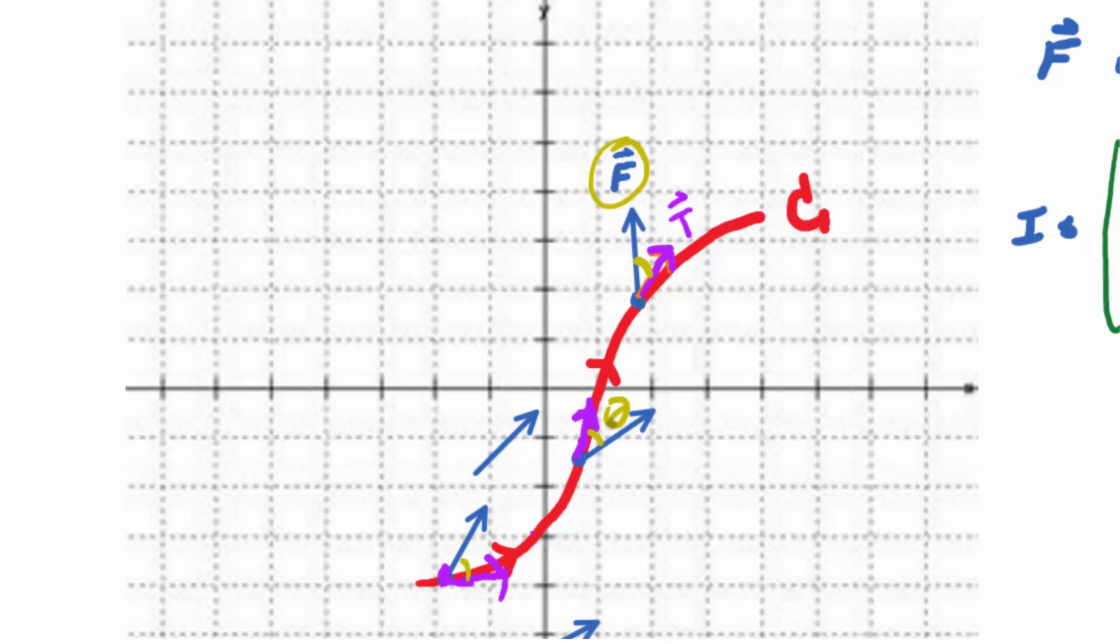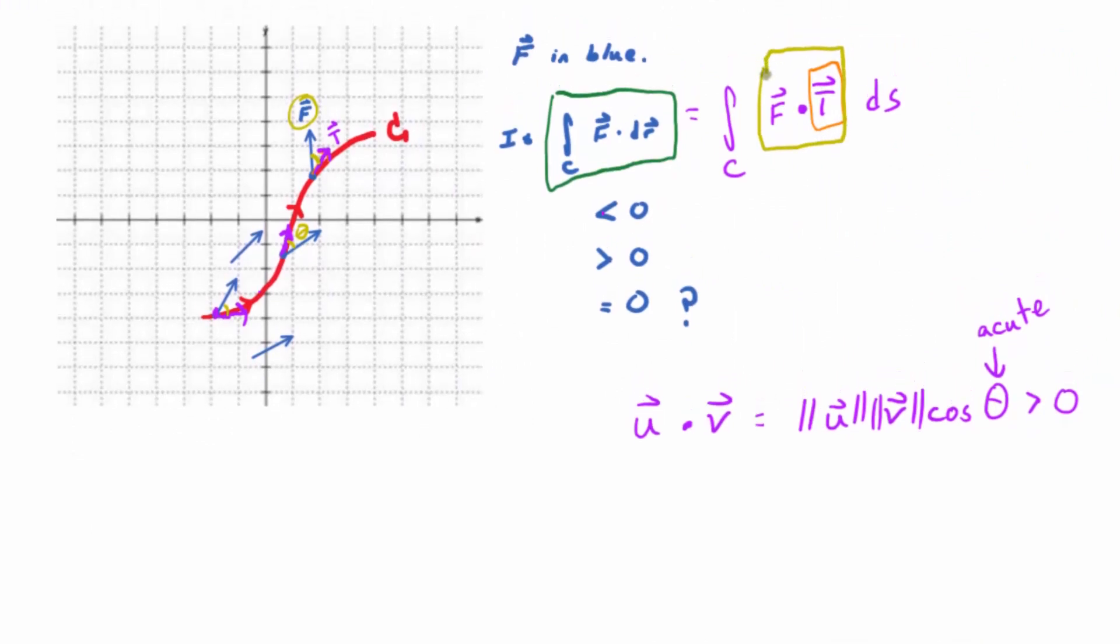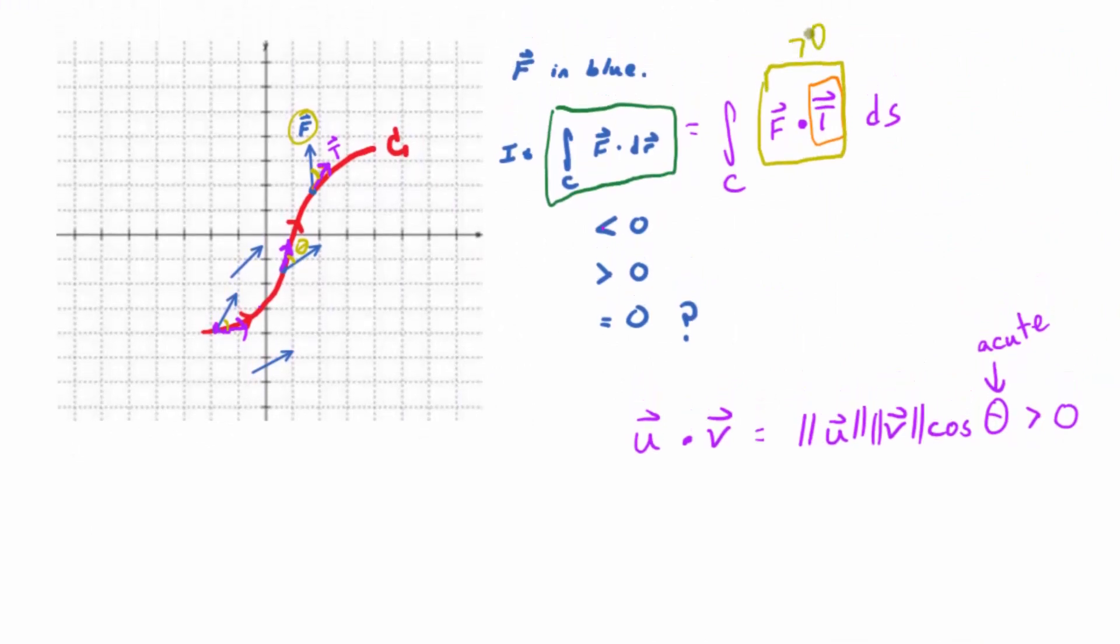So if this angle between F and T is always acute, as it seems to be - this isn't an exact science what we're doing here, but it seems to be that the angle between F and T is going to be acute every time - then F dot T is going to be greater than zero over that curve. So what can you say about an integral with an integrand that's always positive? You can assume that it's going to be positive as well.